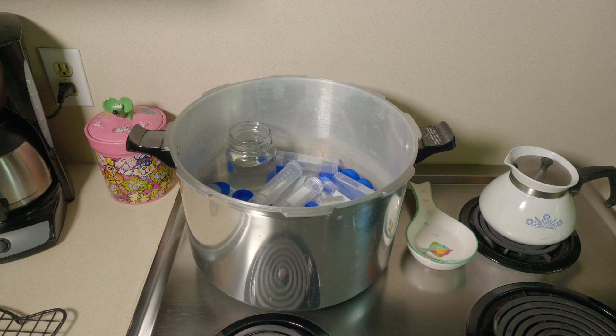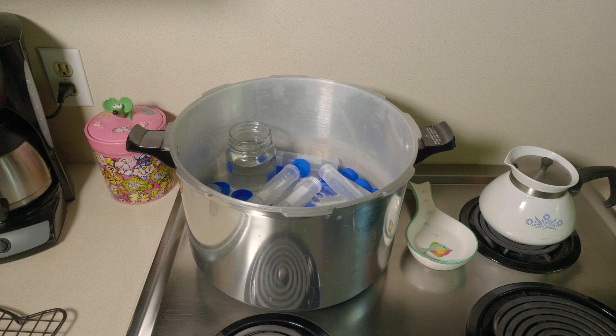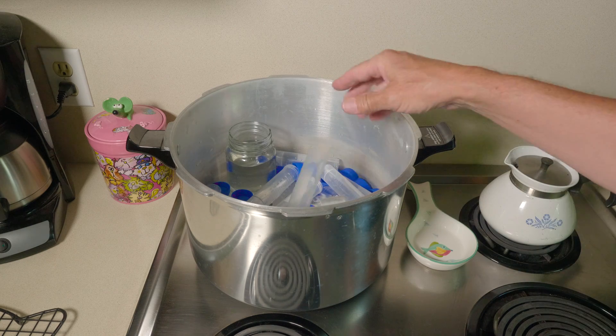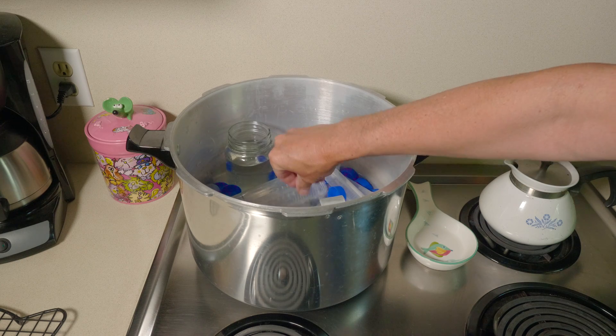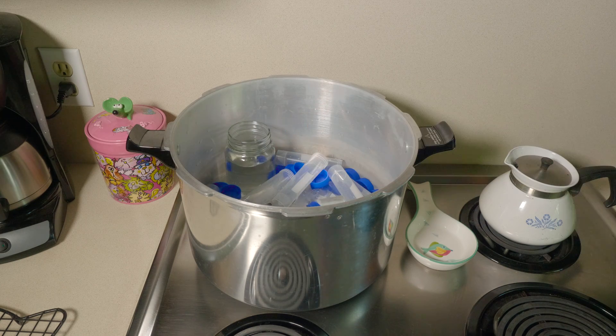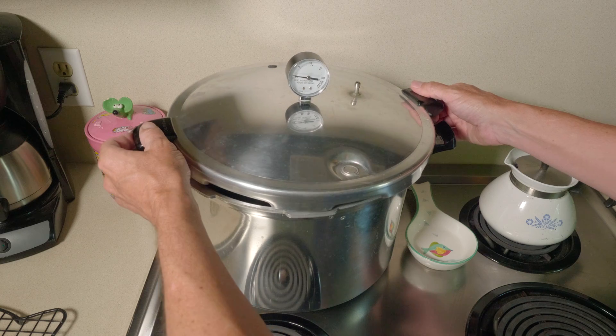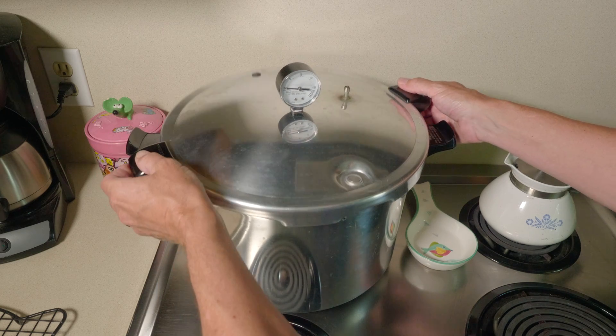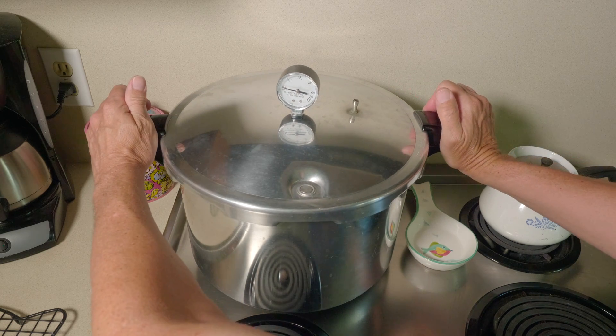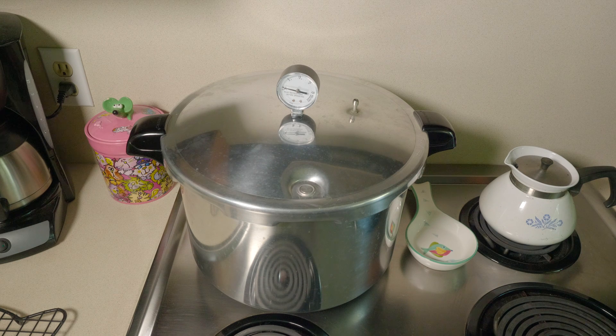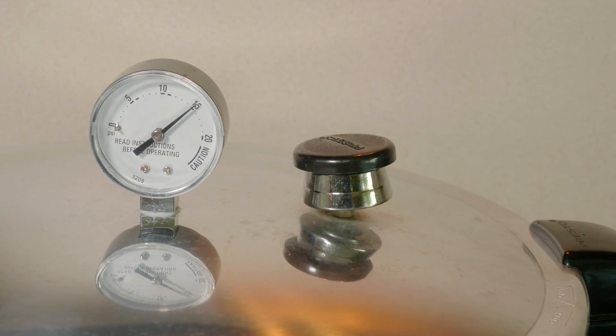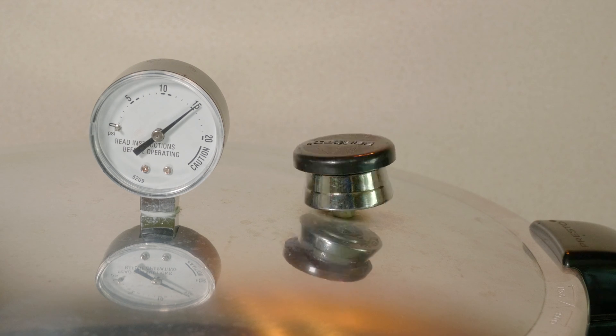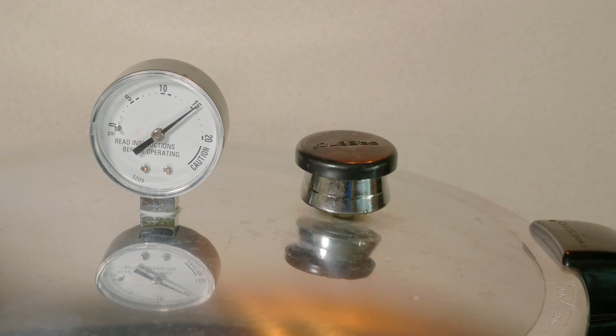I like to start with the pressure cooker. Throw all my vials in, any kind of mason jars or anything I'll be using to transfer the wort around. Set it up there with some water, put the lid on. I just run it up to 15 psi, let it go for five minutes or so, just to get everything nice and clean.